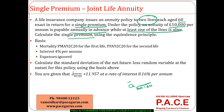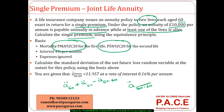To compute this, since the annuity is payable while at least one of the lives is alive, this is equivalent to ä̈₆₀ for the first person plus ä₆₀ for the second person minus ä₆₀:₆₀, which is the joint survival part. The first life is taken as male and the second as female, using four percent interest and the relevant actuarial tables.